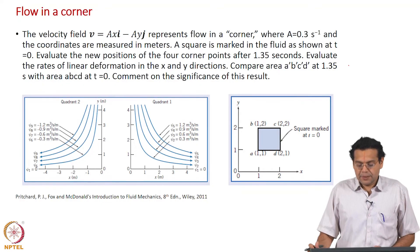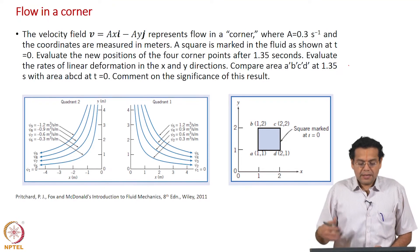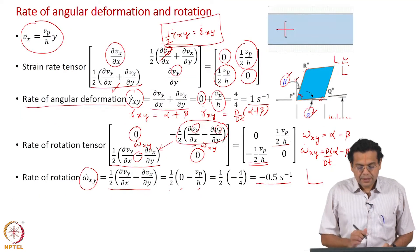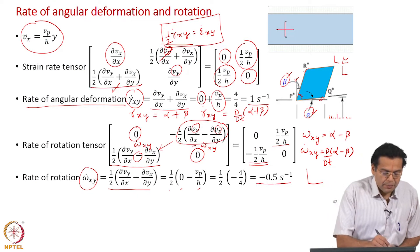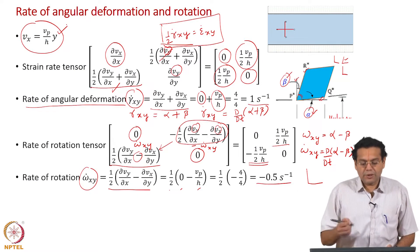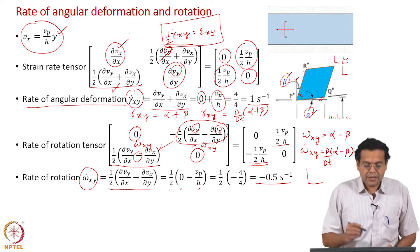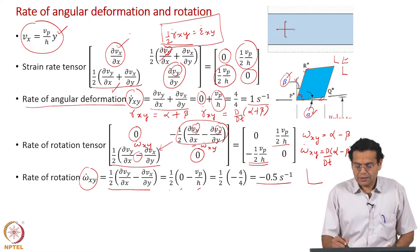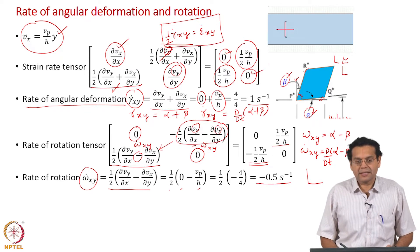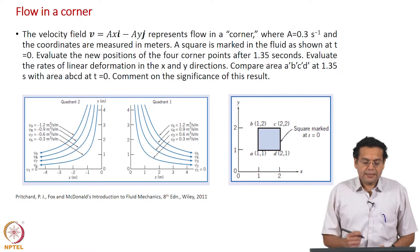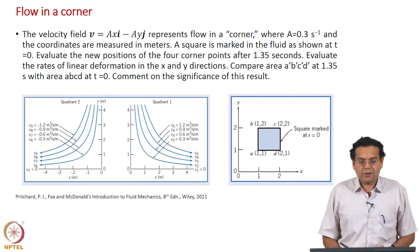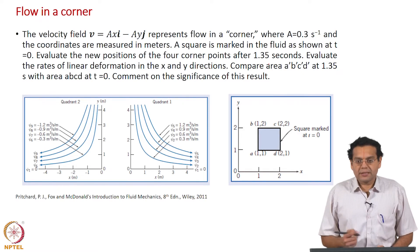Let us take another example. In the earlier example, the velocity component v_x depended on y and there was no y component, so the normal strain rates were 0. The diagonal elements represent the normal strain rates and they were 0. Now let us take an example which has the other component, namely the normal strain rate, but does not have shear strain rate and rotation. That is the objective of this example.